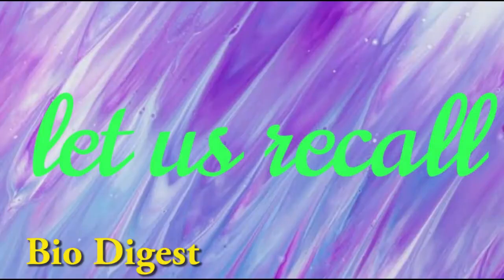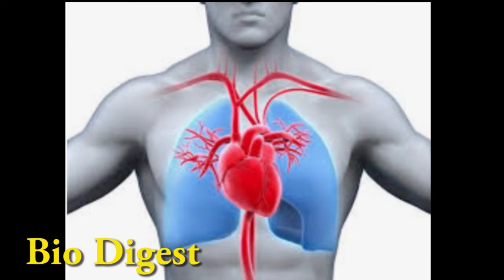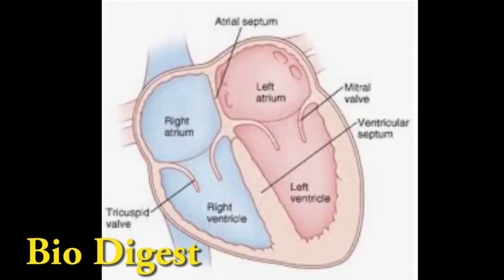Let us recall. Location of the heart: the heart is located between the two lungs and above the diaphragm. Covering: the heart is protected by a double-walled membranous covering called the pericardium, which contains a lubricating pericardial fluid that reduces friction during heartbeat and protects the heart from mechanical injuries. Chambers of the heart: the heart consists of four chambers — the two upper atria and the two lower ventricles.